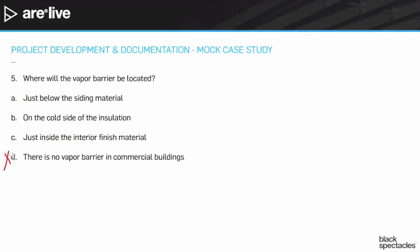D is not it. Just below the siding material would be a logical answer if we were in a very warm climate, because the trick here is you are putting the vapor barrier on the warm side of the insulation. In a very warm climate, the warm side of the insulation is towards the outside of the assembly. In a temperate or cold climate, the warm side is on the inside. So just below the siding material would be on the outside — that is no good.